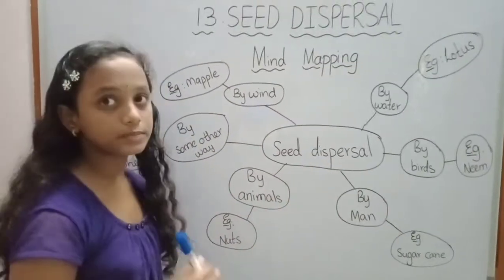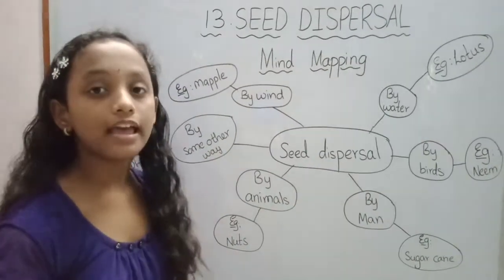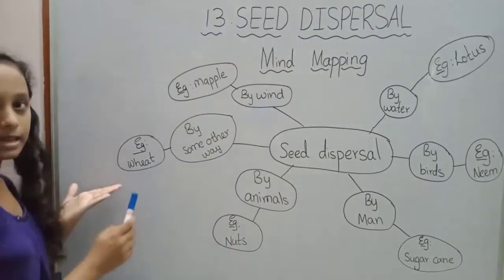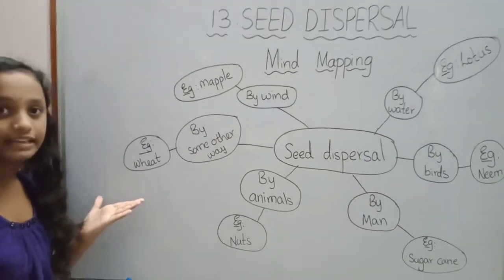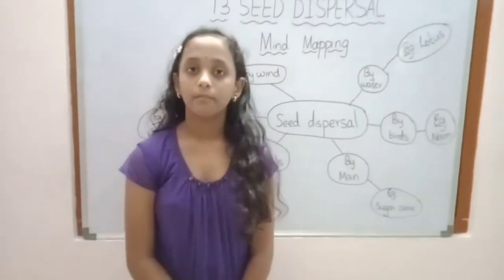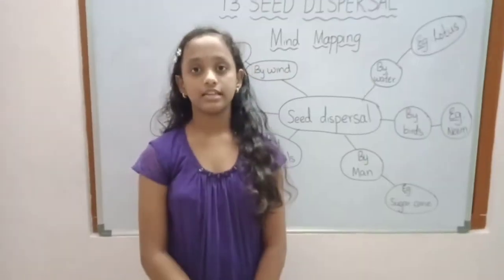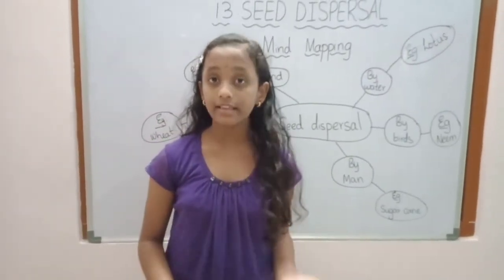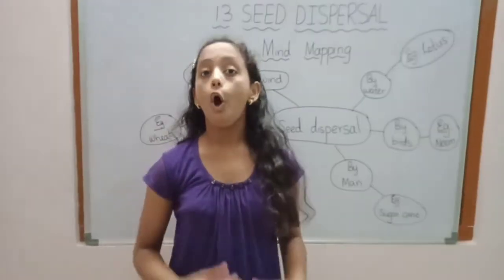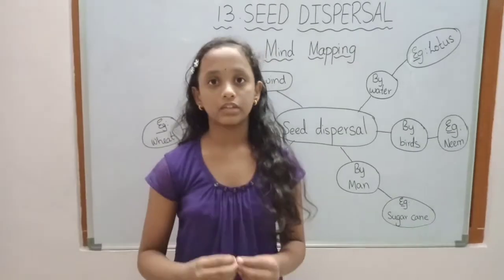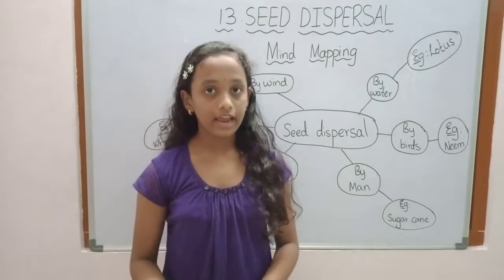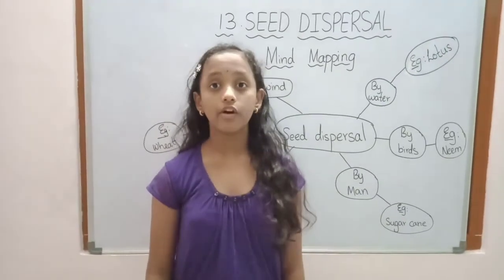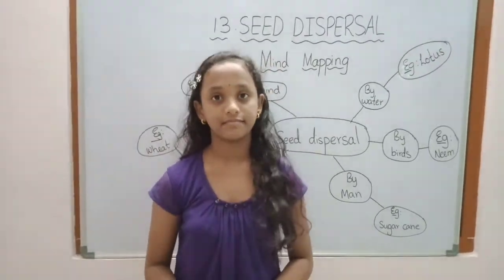Some seeds are dispersed by other ways. For example, wheat. Most of the seeds fall on the soil and get buried in the ground. After some time, they germinate and grow into small plants.